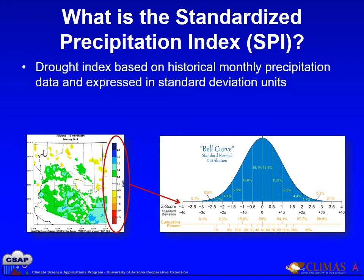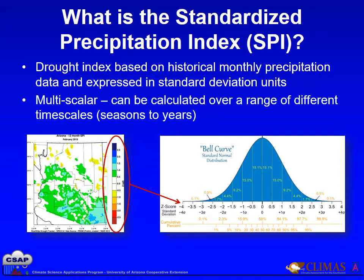The SPI is a drought index based on historical monthly precipitation data and expressed in standard deviation units or z-scores. The SPI is also a multi-scalar index; it can be calculated over a range of different timescales from one month to many months or years.